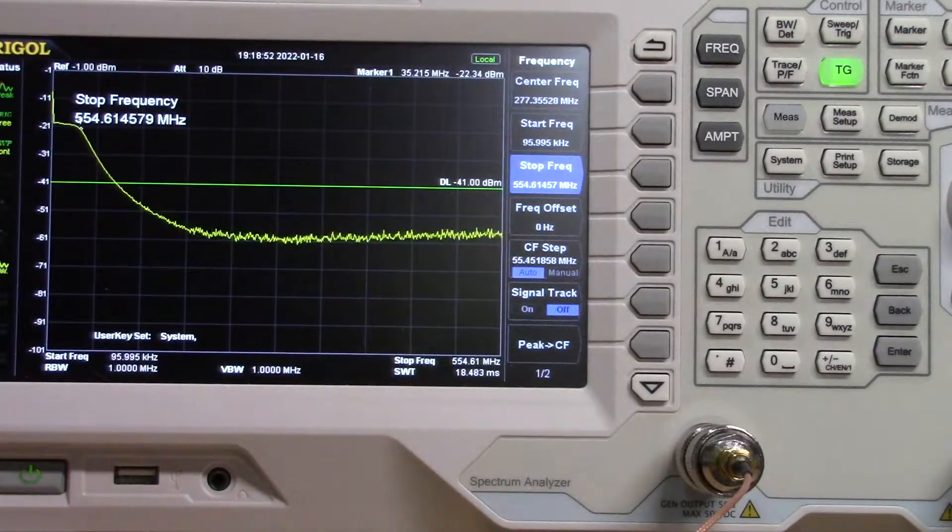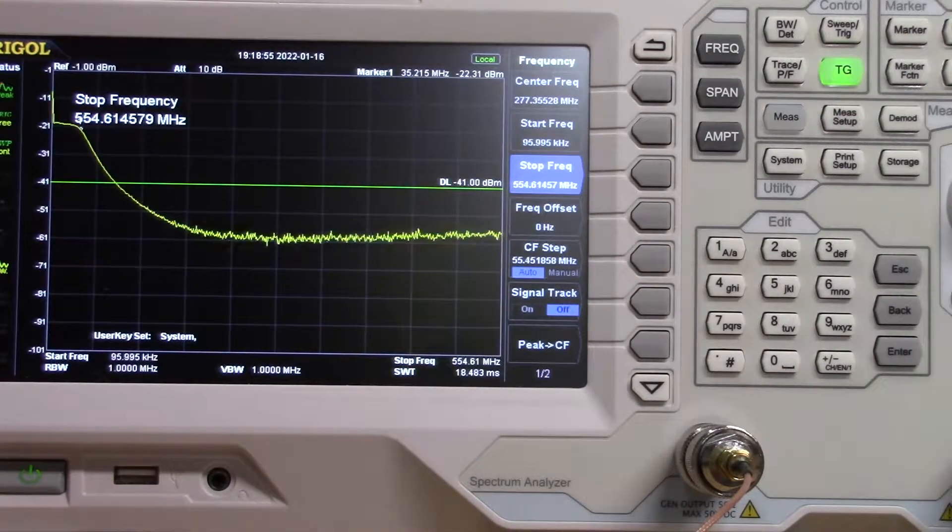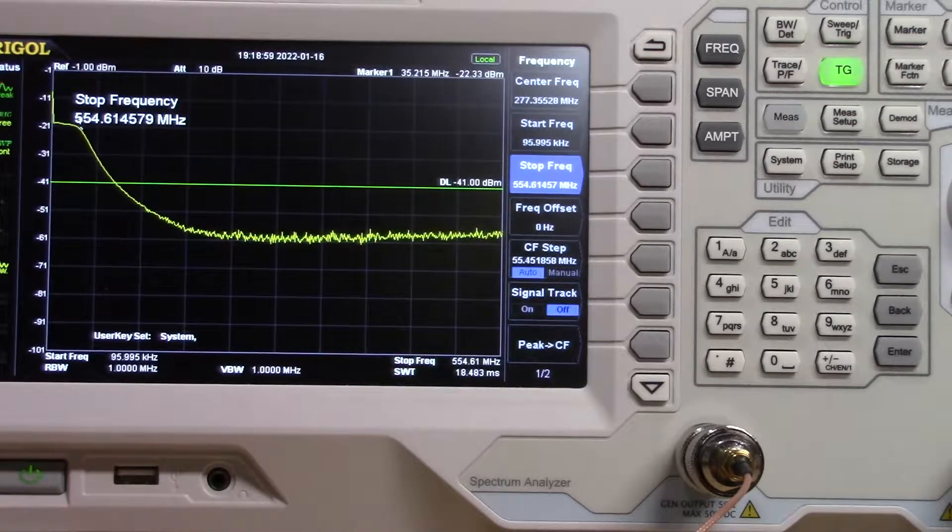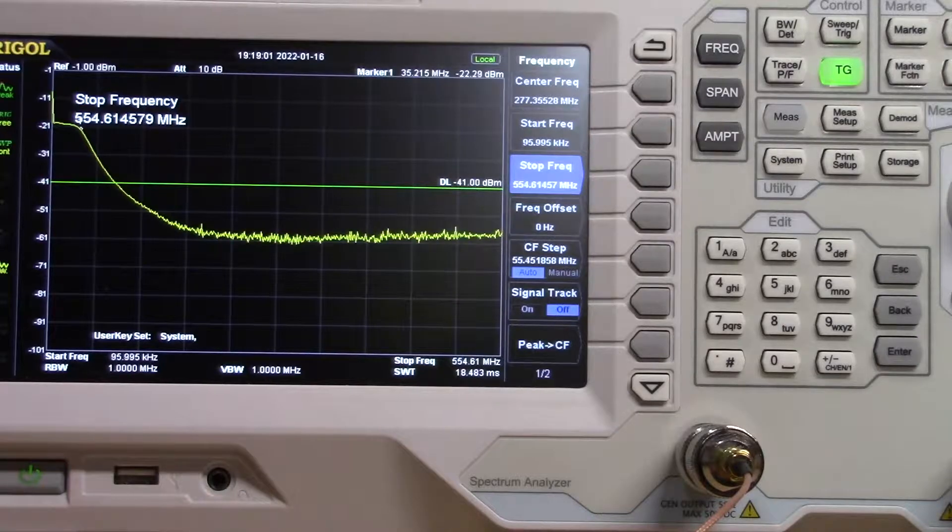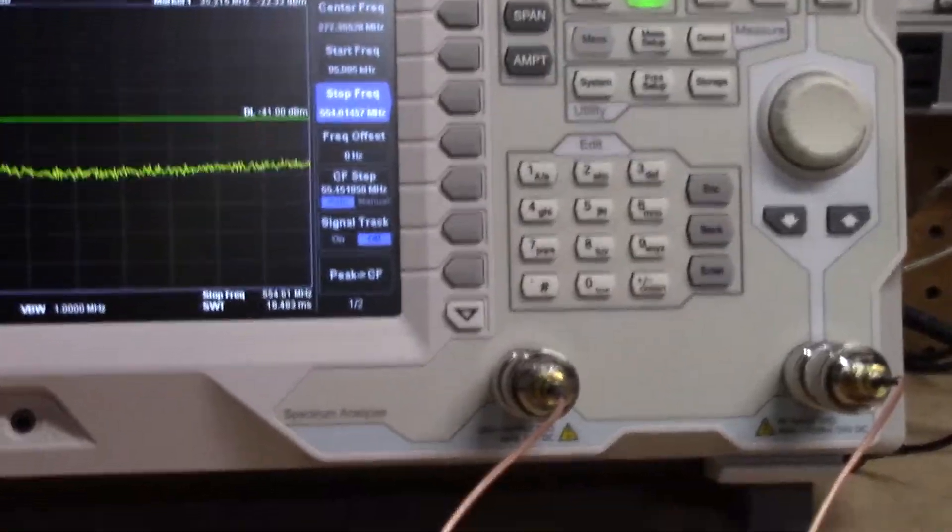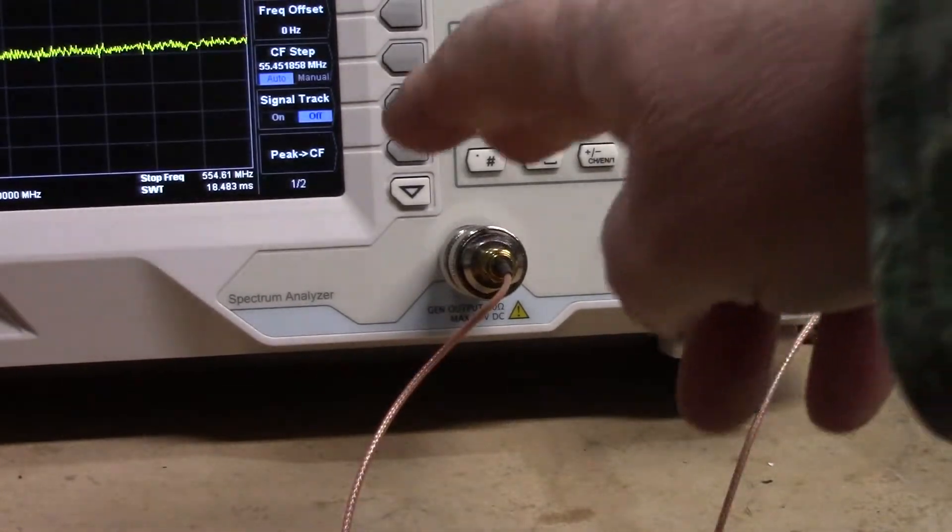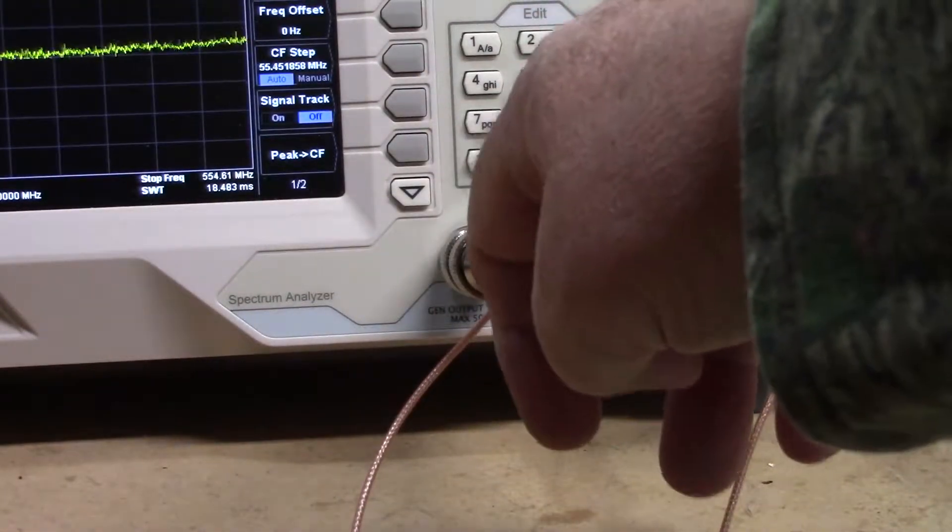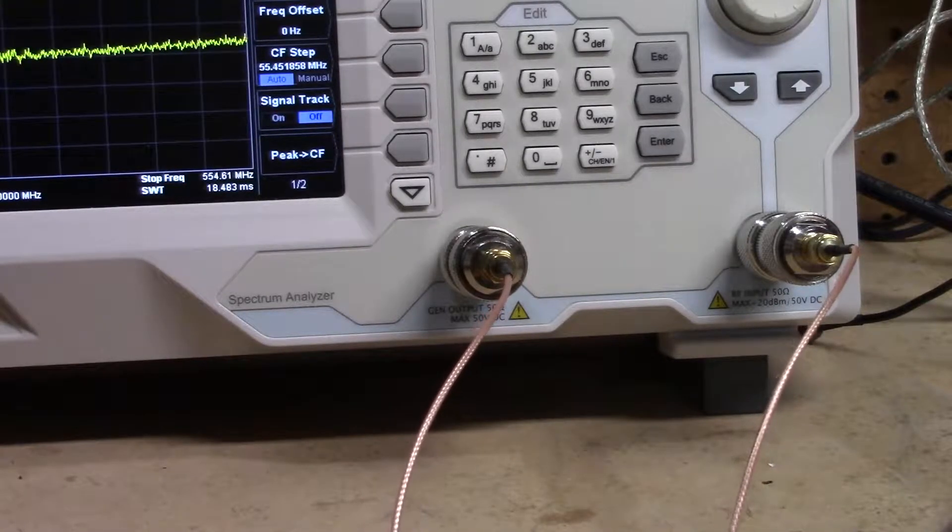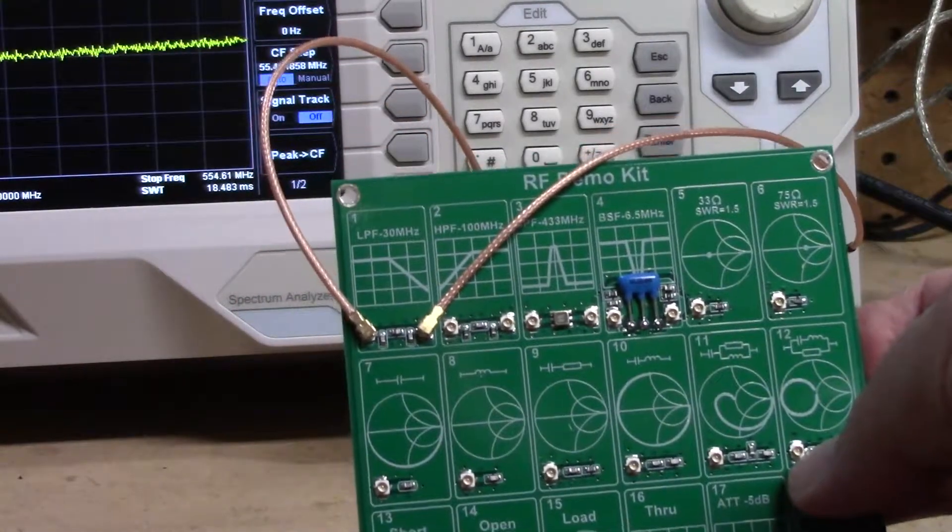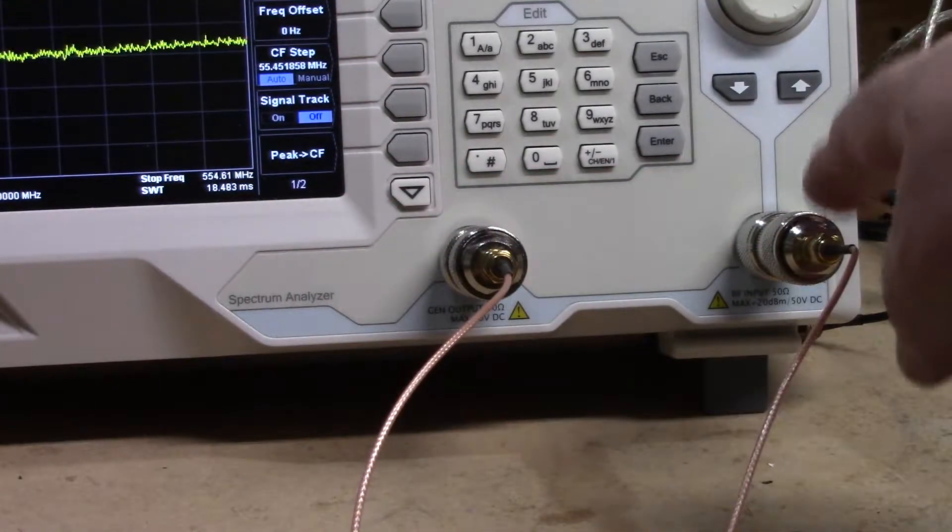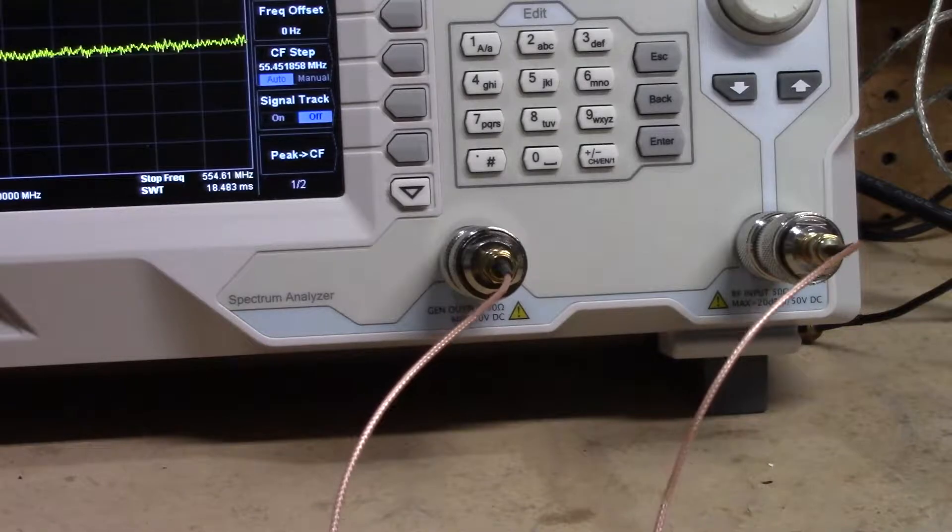Okay, so I've got us connected up here to the Rigol DSA 815 spectrum analyzer. And what we're doing here is, I'm going to move the camera so you can see this, we have our tracking generator which generates an output signal connected to the input of our demo board on the left side. And then the output of this filter is going to the input of the spectrum analyzer.